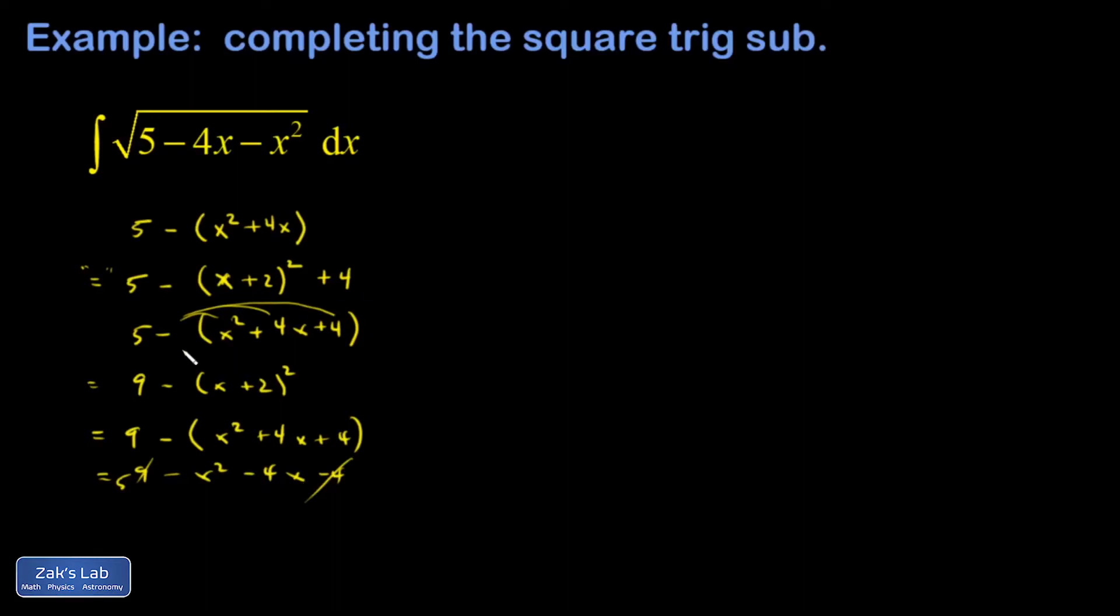This is a useful way of rewriting the interior of the square root so it looks like a constant minus a variable thing squared. So here we go: I have the square root of 9 minus (x + 2)². When I do my trig substitution, what I'm trying to match here looks like it comes from what I would call the first Pythagorean identity.